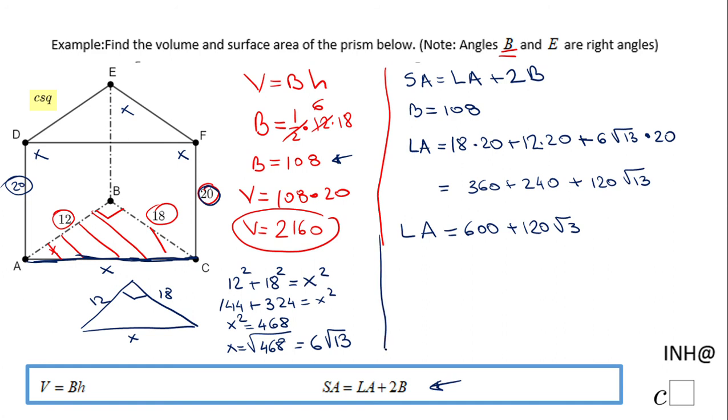So, for finding the surface area, I'm going to take this lateral area and I'm going to add two bases, 2 times 108. So, that will be 600 plus 120√13 plus 216. So, the final answer for the surface area will be 816 plus 120√13. And this is the exact answer.